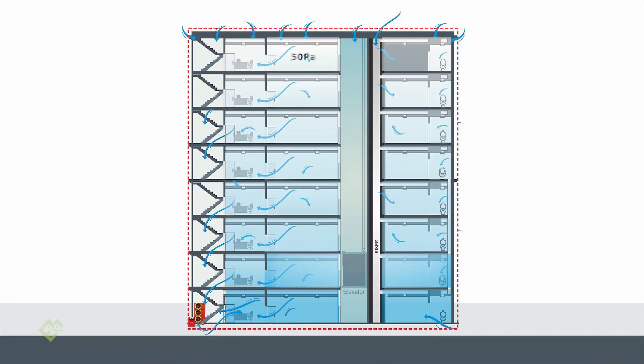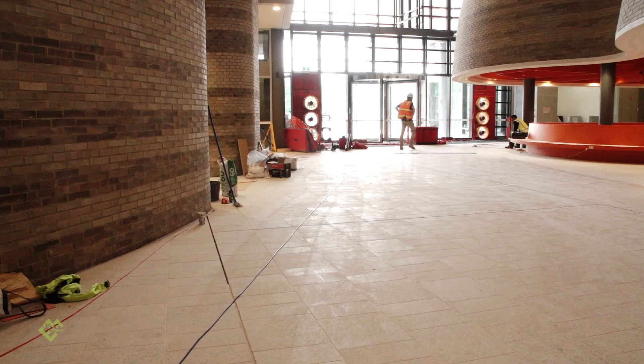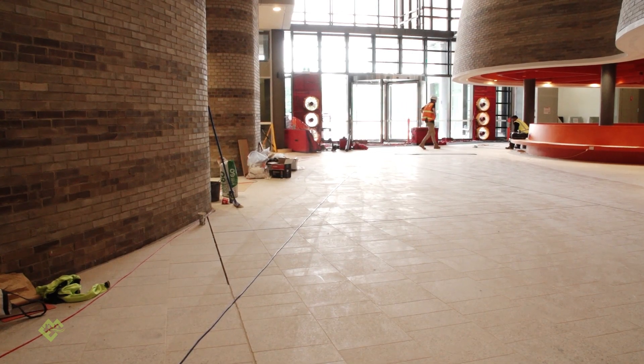In an ideal world, if you conduct a test according to the standard, you need to try to maintain the pressure as evenly as possible all over your building envelope — within 10%.